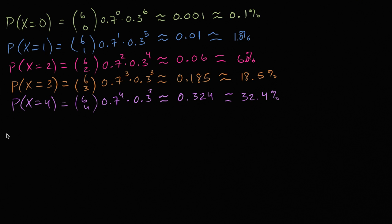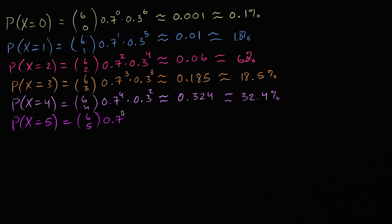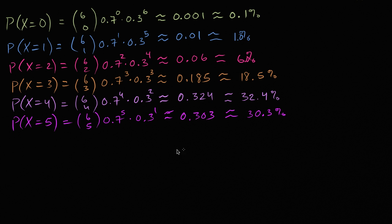The probability that our random variable is equal to five is going to be six choose five, times 0.7 to the fifth power, times 0.3 to the first power, and that is going to be roughly 0.303, which is 30.3%.